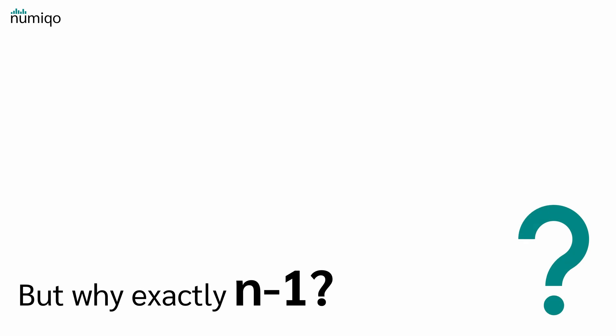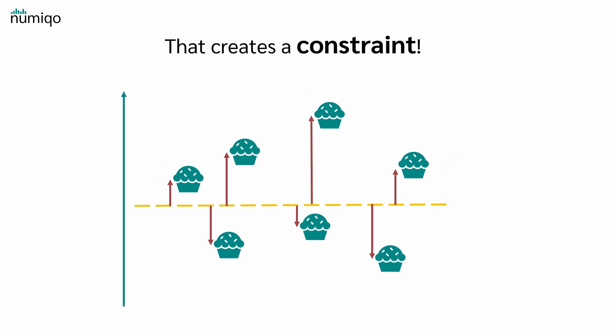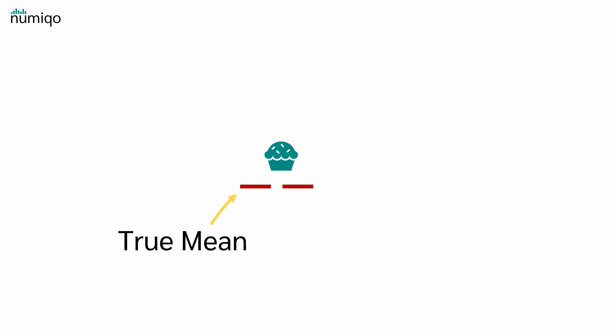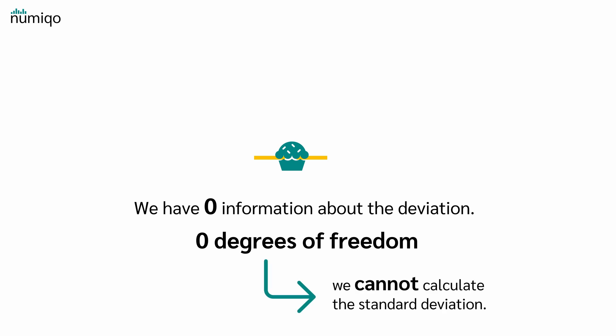But why exactly n-1? When the mean is unknown, we first estimate it from those same data points. That creates a constraint. If we know the first five deviations, the sixth deviation can easily be calculated from the first five. Let's say we only have one muffin and we know the true mean — then we can theoretically calculate the standard deviation. But if we don't know the true mean and we estimate the mean from that one muffin, the sample mean is exactly the muffin's value. So we have zero information about the deviation — zero degrees of freedom — and we cannot calculate the standard deviation.